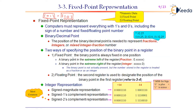In fixed point representation, the binary point is always fixed at one position. If the binary point is at the extreme left of the register, the register value is a fraction part. If the binary point is at the extreme right, the value is an integer part. Within the computer system, only two registers are present — the F register for fraction and the I register for integer — and the binary point is imagined to lie between them.